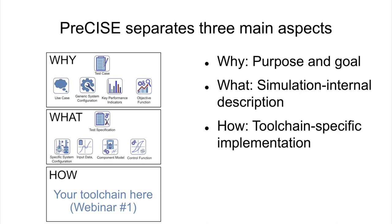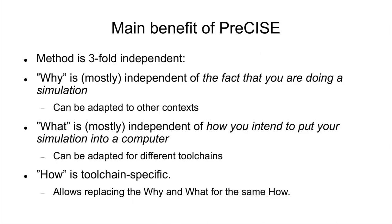In the what, you have a combination called a test specification. This includes a specific system configuration, input data, component models, and control functions. By combining these, you can describe the simulation in a way that is independent of your tool chain. That independence is important because when you describe the why and the what separately from your tool chain, your simulation description is not tied to the specific tool chain you choose.